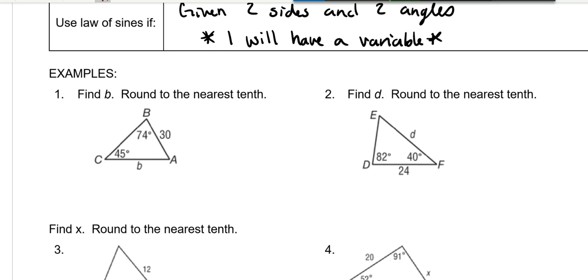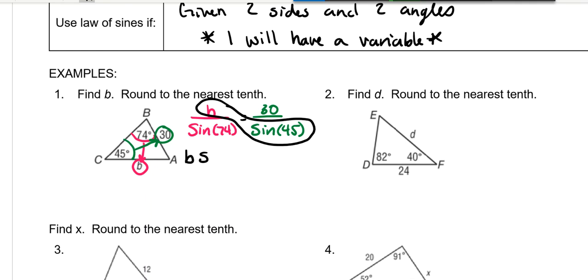In order to solve this, you need to put sides and angles together. So in other words, this angle goes with this side. So we'll put B over the sine of 74, and that's equal to 30 over the sine of 45. And you'll cross multiply.